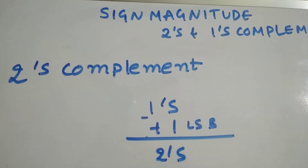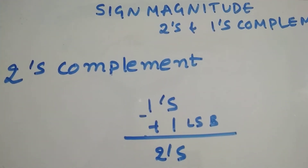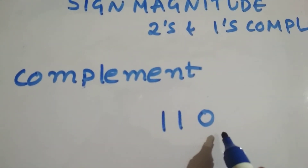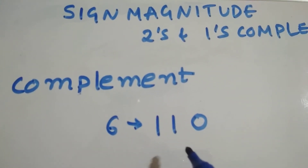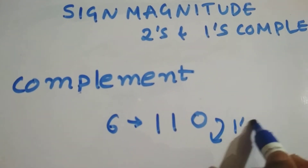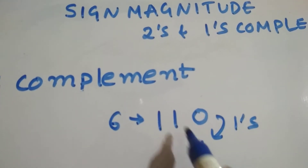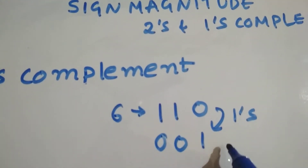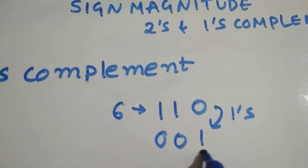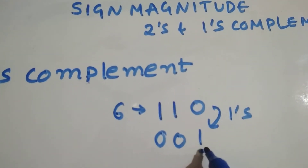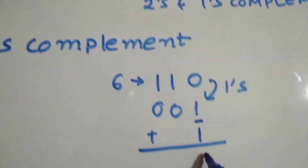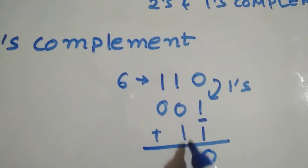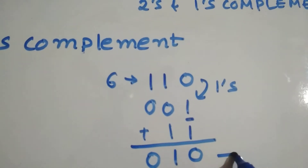Let me show an example. Let's convert the number 6 into two's complement. First, convert to one's complement by inverting: 6 in binary is 0 1 1 0, so one's complement is 1 0 0 1. Now add 1 to the LSB — the LSB is on the right-hand side. Adding 1 gives us 1 0 1 0. That is the two's complement of 6.